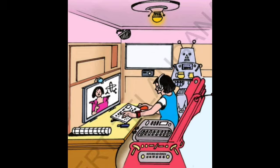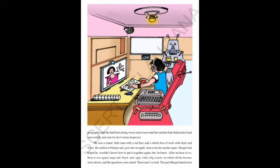The inspector — not a police inspector, but one who looks after the education department and the computers, who sets the speed of the computers and repairs the machines — was a round little man with a red face and a whole box of tools with dials and wires. He smiled at Maggie and gave her an apple, then took the teacher apart. Maggie had hoped he wouldn't know how to put it together again, but after an hour or so, there it was again — large, black, and ugly, with a big screen on which all the lessons were shown and the questions were asked.